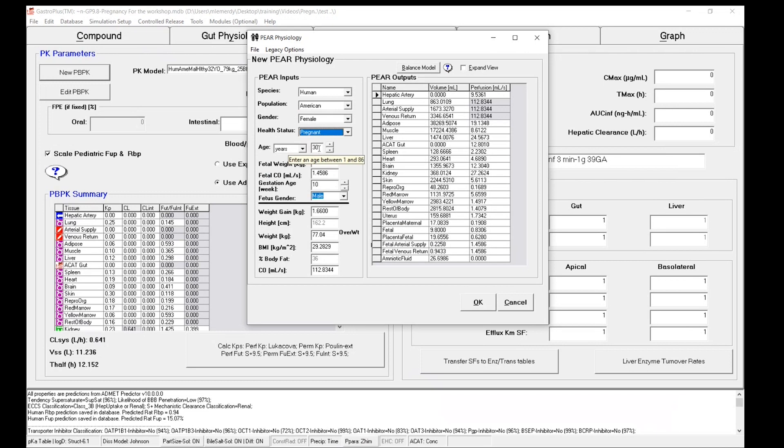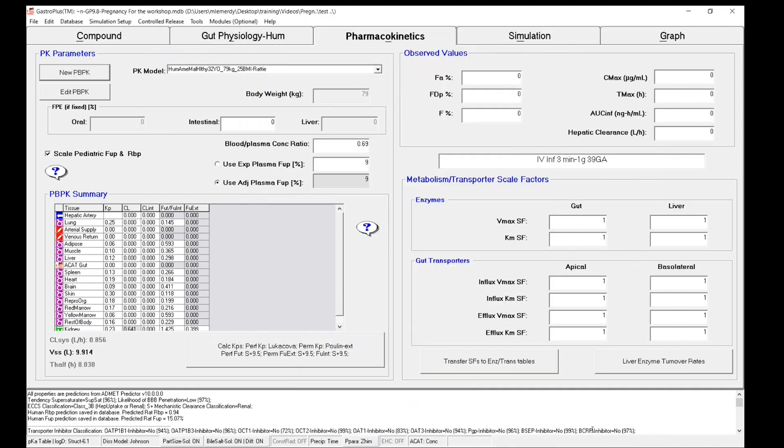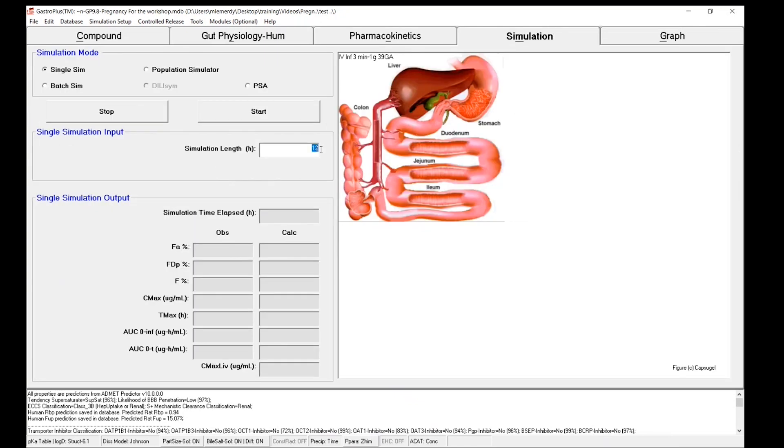Based on the publication information, let's change the physiological parameters. The age was 33 years old. The gestation age is 39 weeks. And the body weight during delivery is 79 kilograms. I can then click on OK. And this will save my new PBPK model and save all of the information.